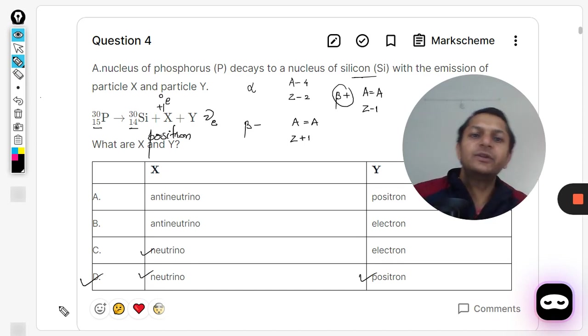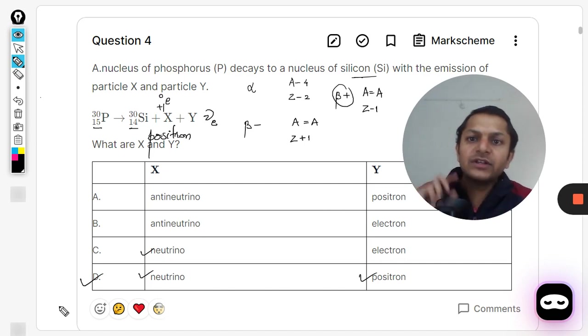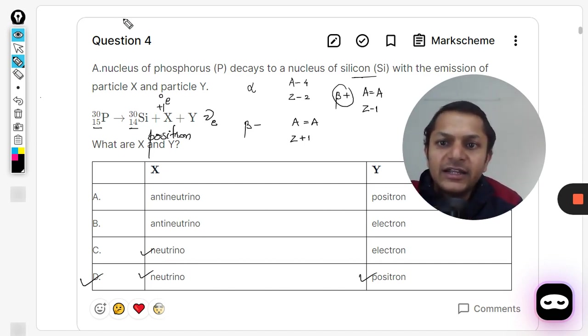And yes, so positron will be produced, so answer will be D. So this is how we do this question. There are two reactions that I have already given you in some of the other questions and the reaction inside the nucleus, this is what is actually happening there.